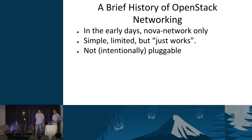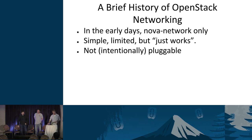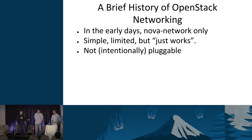Some history: there was a time where Neutron wasn't a thing — no Quantum or any alternative to Nova Network. When OpenStack started, we had Nova Network. It was simple and quite limited, but it just worked, which was fantastic. It was not intentionally pluggable — it was just software, so you could put your own code in there if you wanted to, but that really wasn't the goal. It was just a very basic, straightforward way to provide networking to your cloud.